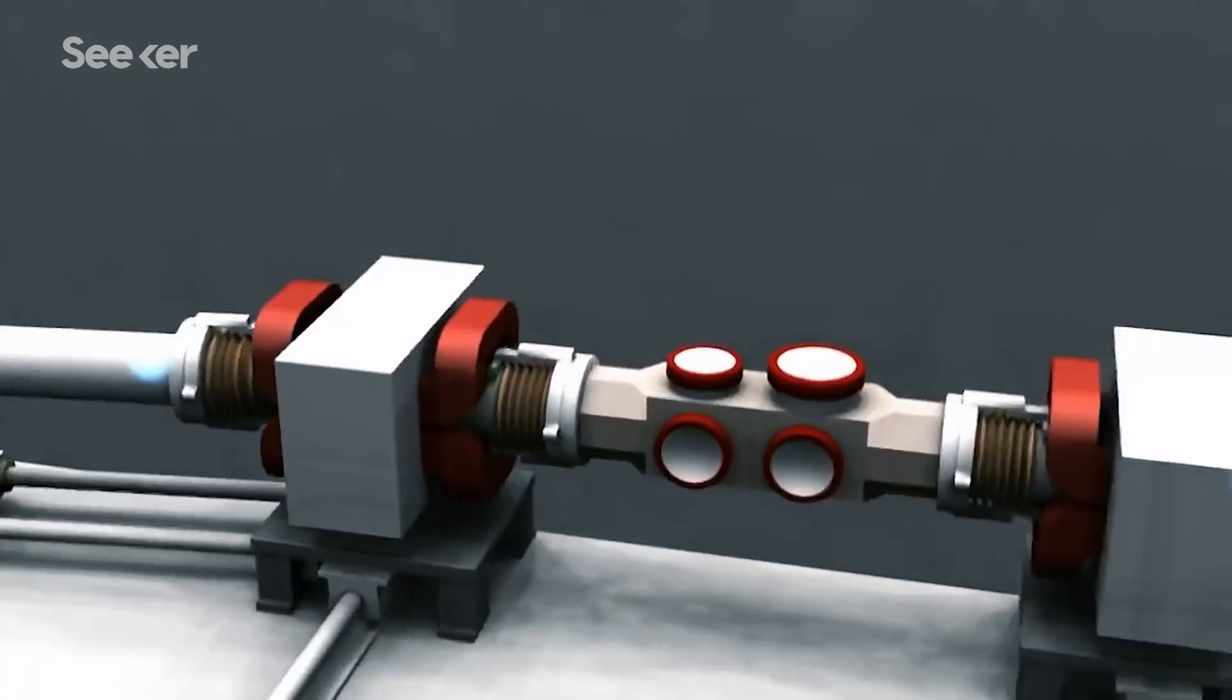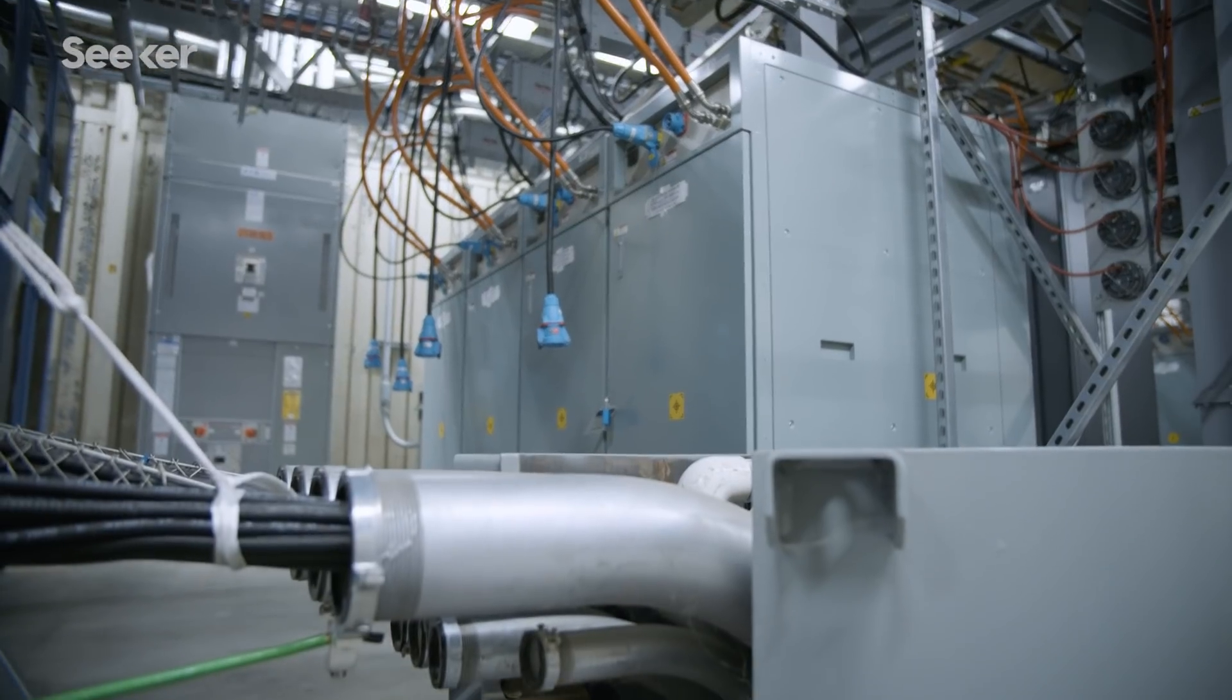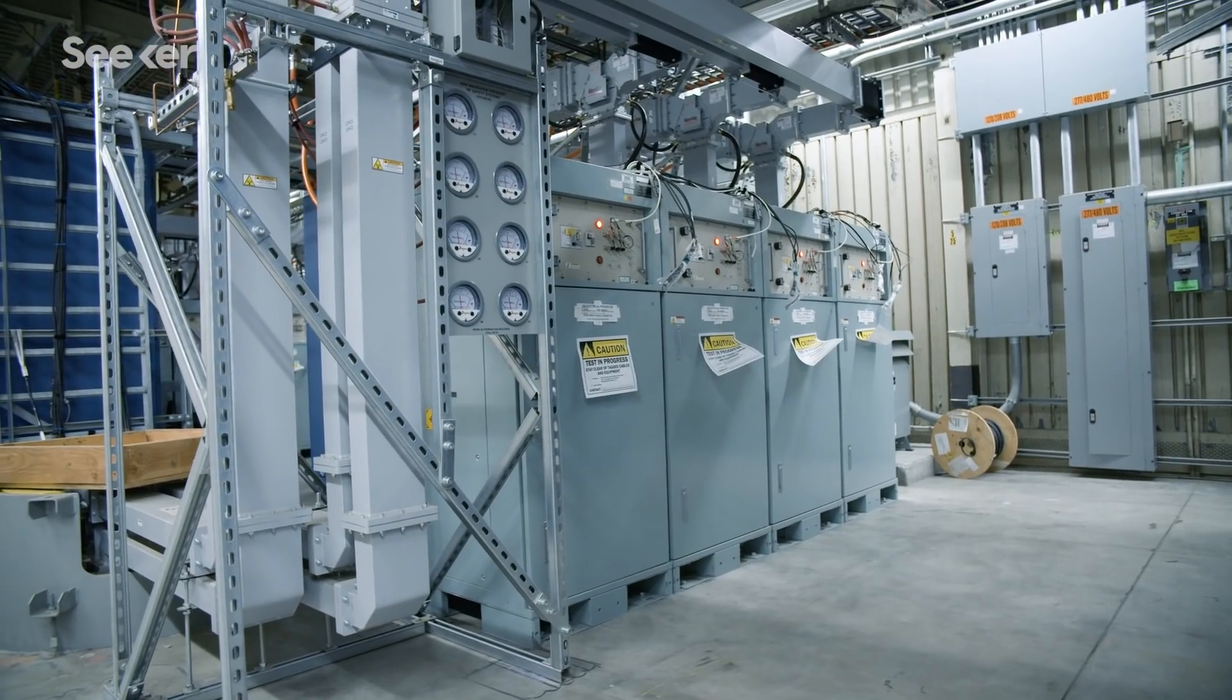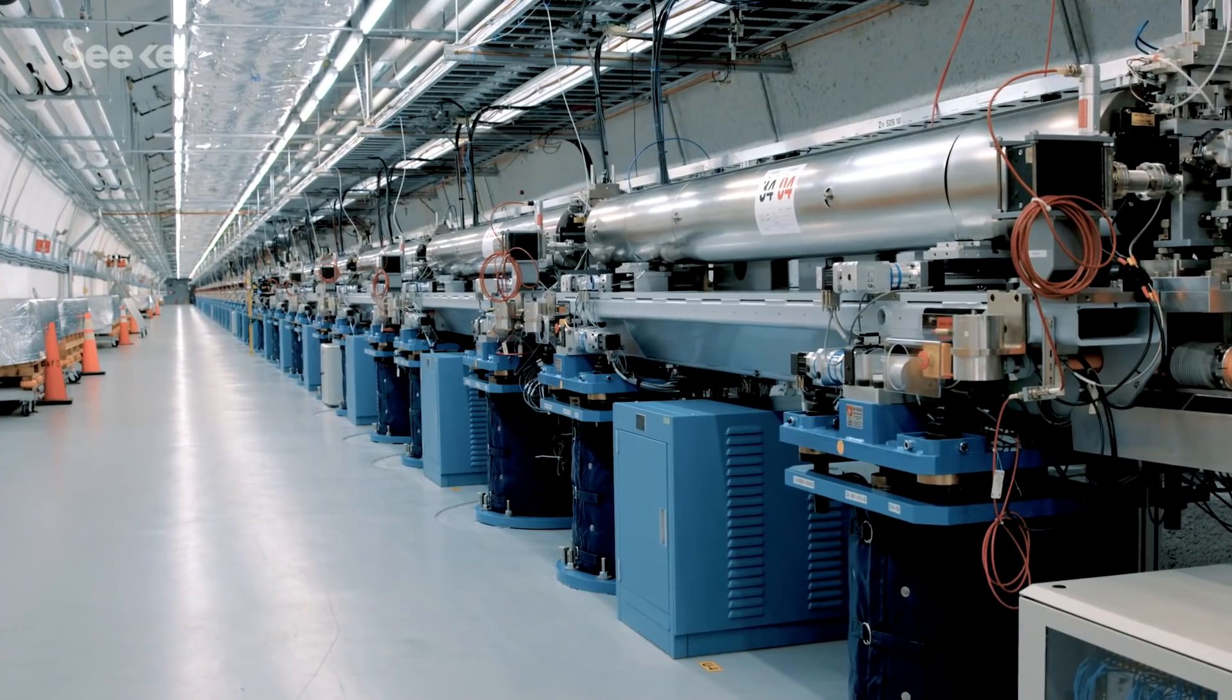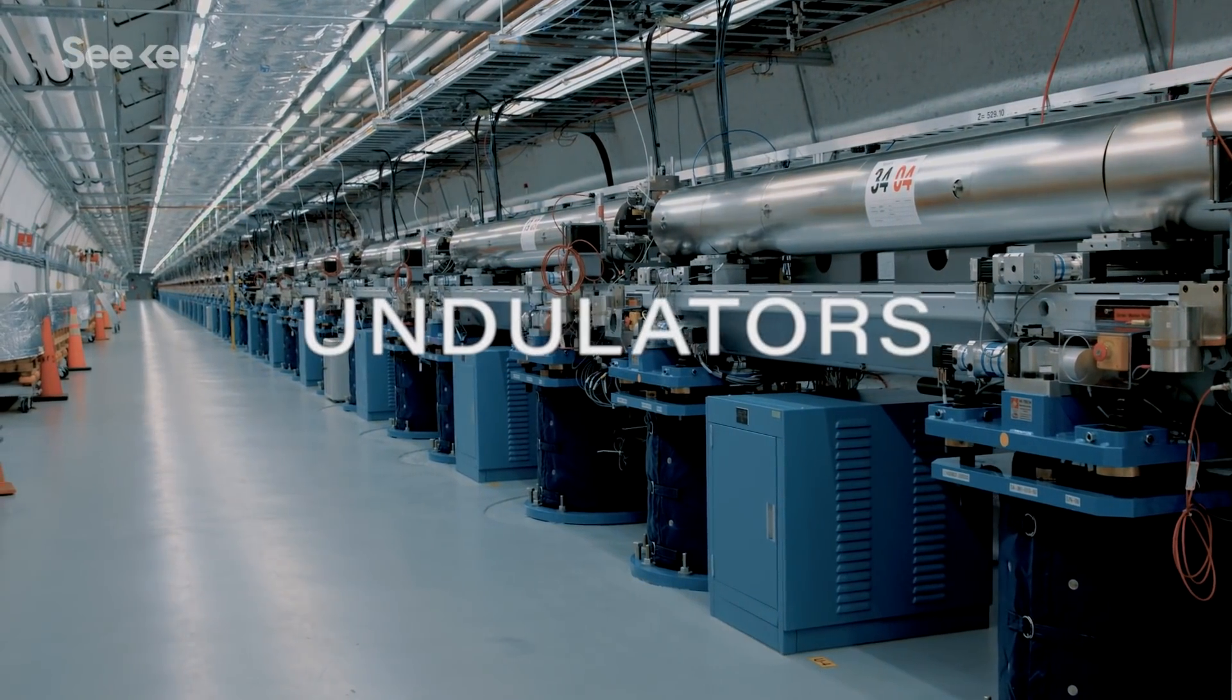The accelerator then uses big long-standing technology called klystrons. We can think of them as microwave ovens. And the microwave ovens basically accelerate these electrons. And as we accelerate those electrons, then what makes LCLS really go are what are called undulators.